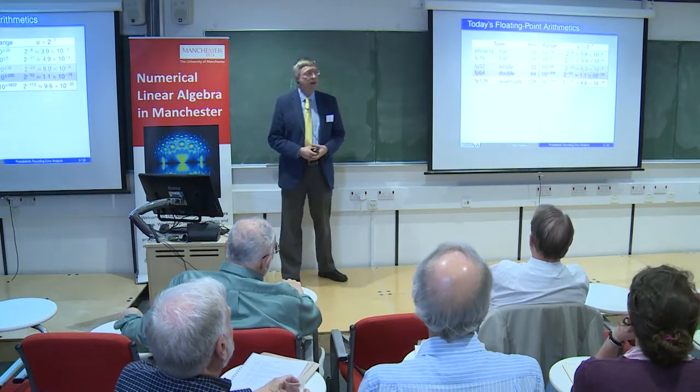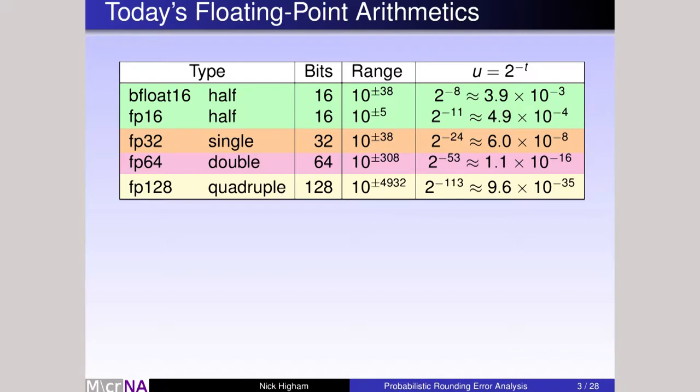Let me recap on the landscape of floating point arithmetic today. Until not so long ago, we really only had two precisions, single and double, which I'm calling FP32 and FP64, defined in the IEEE standard in 1985. The 2008 revision defined half-precision, FP16, and quadruple, FP128. Those are the four current IEEE standard arithmetics.